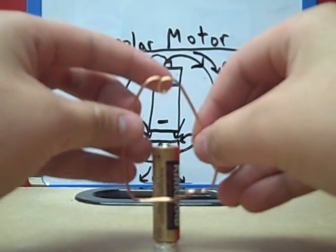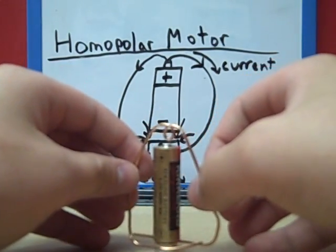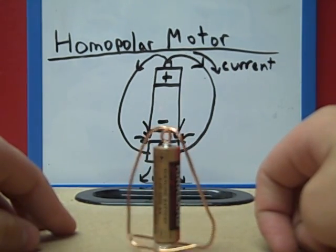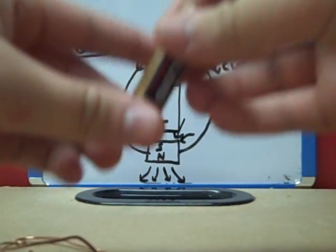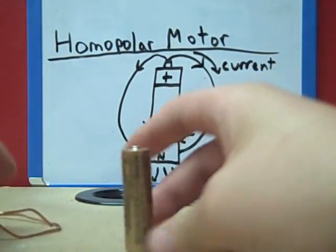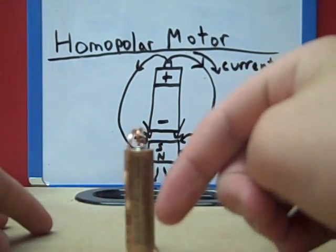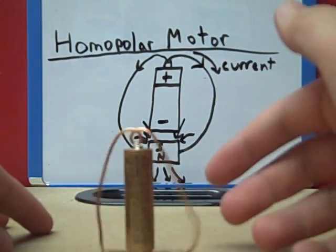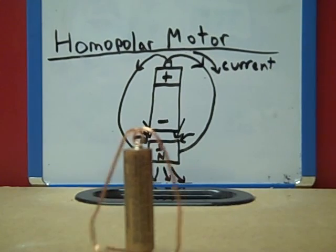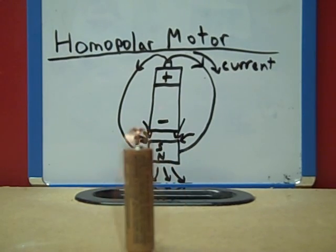So the wire should rotate clockwise, and let's observe if that is the truth. Sometimes you need to give it a push. This one may be out of juice. Let's try another one. Luckily, I have a spare battery. And we can see that this is the truth. It is moving clockwise. Yeah, all these batteries are out of juice. Nope, nope, it's going. So yes, it is moving clockwise.